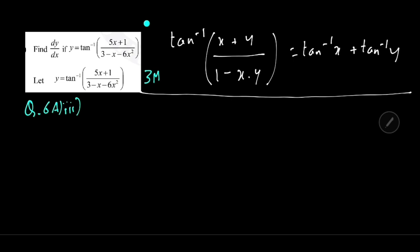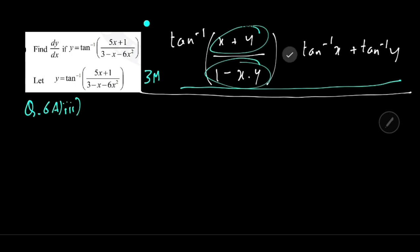This question was asked in 2018 for 3 marks. Find dy by dx if y is equal to tan inverse of 5x plus 1 upon 3 minus x minus 6x squared. We need dy by dx. The direct method using 1 upon 1 plus x squared will be very complicated, so we will use the identity: tan inverse of (x plus y) upon (1 minus xy) equals tan inverse x plus tan inverse y.